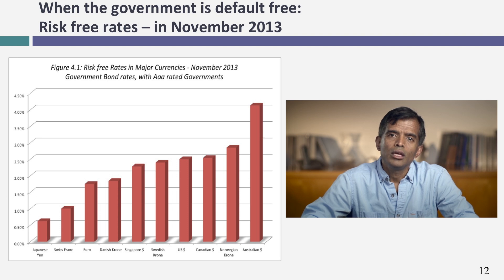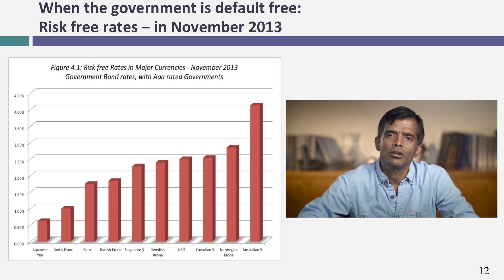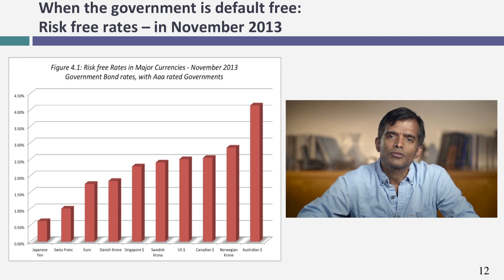If you're a stickler and argue there's default risk even in the German rate, you could use the 10-year bonds issued by the European Central Bank — the rate on that was about 1.73% at the time of this analysis. In fact, if you're looking at a currency where the government issuing the bond is AAA-rated, you can get a risk-free rate by using the 10-year government bond rate in that currency. I've compiled risk-free rates in different currencies where the government was still viewed as default-free with a AAA local currency rating.